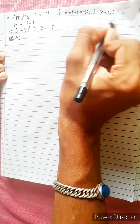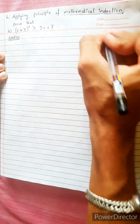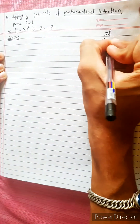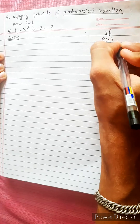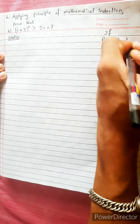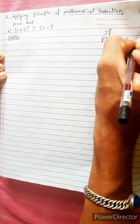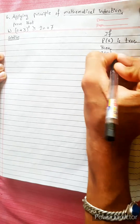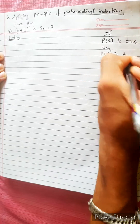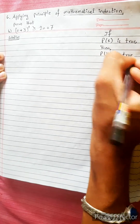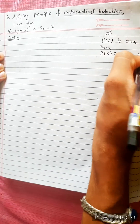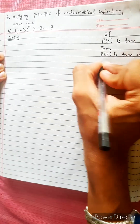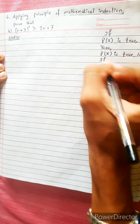Applying the Principle of Mathematical Induction. The summary is this: P1 is true, and Pk is true.